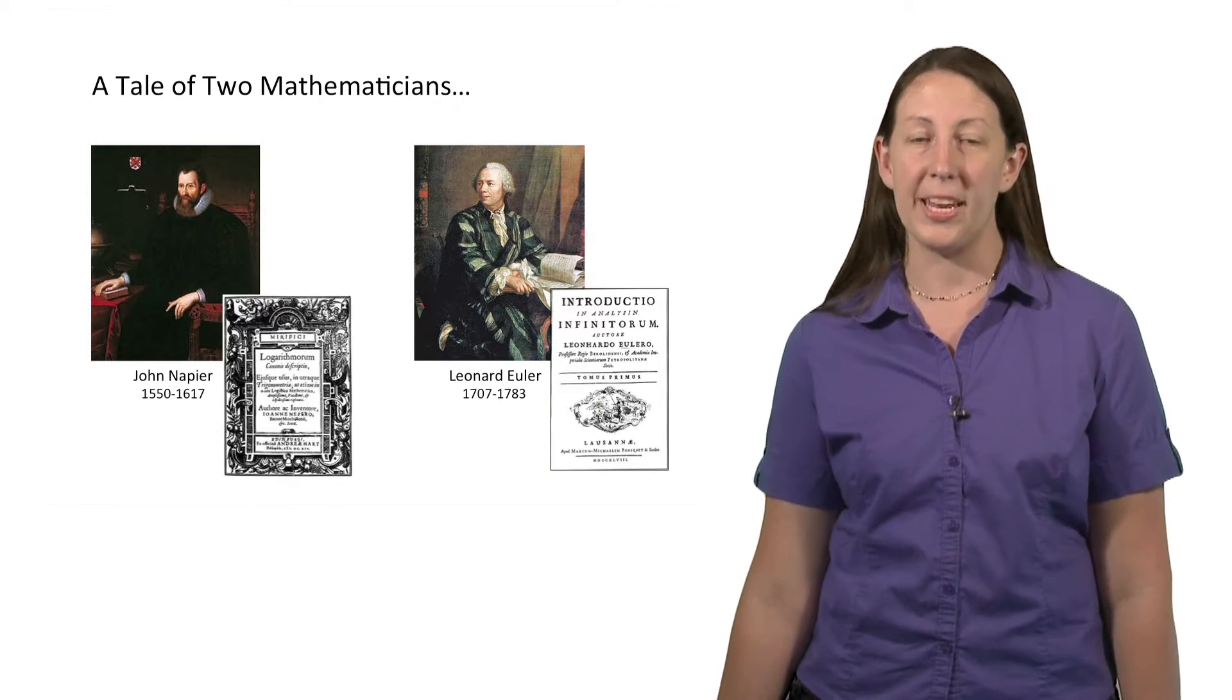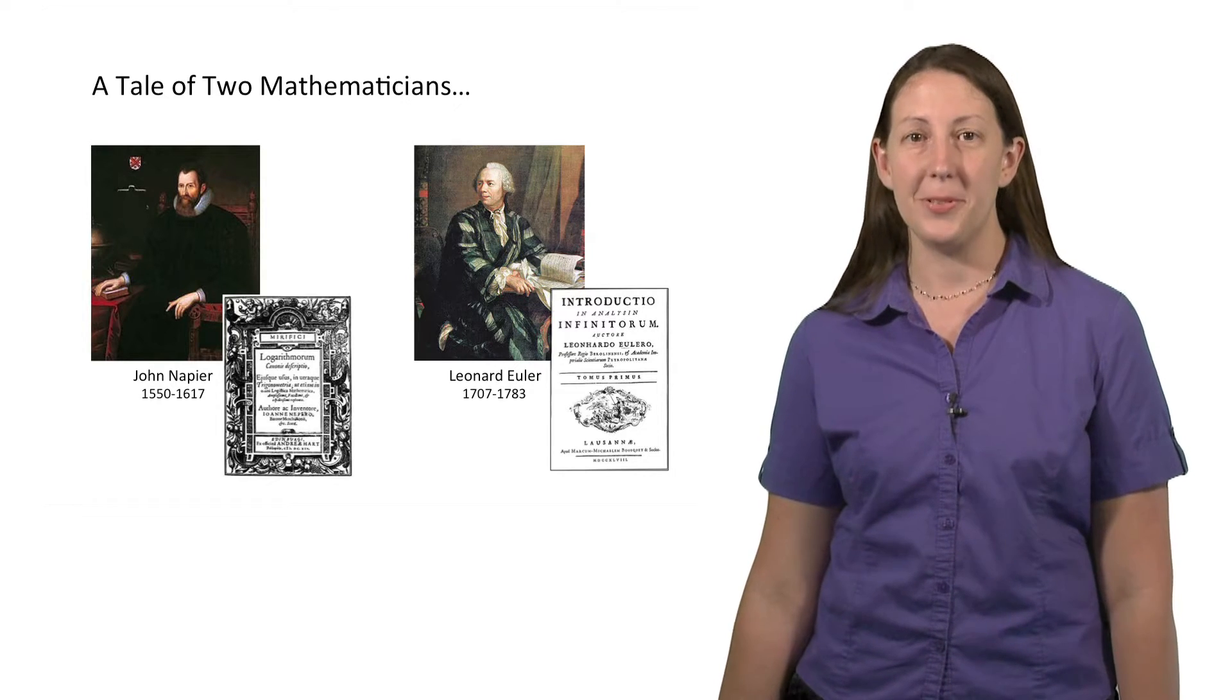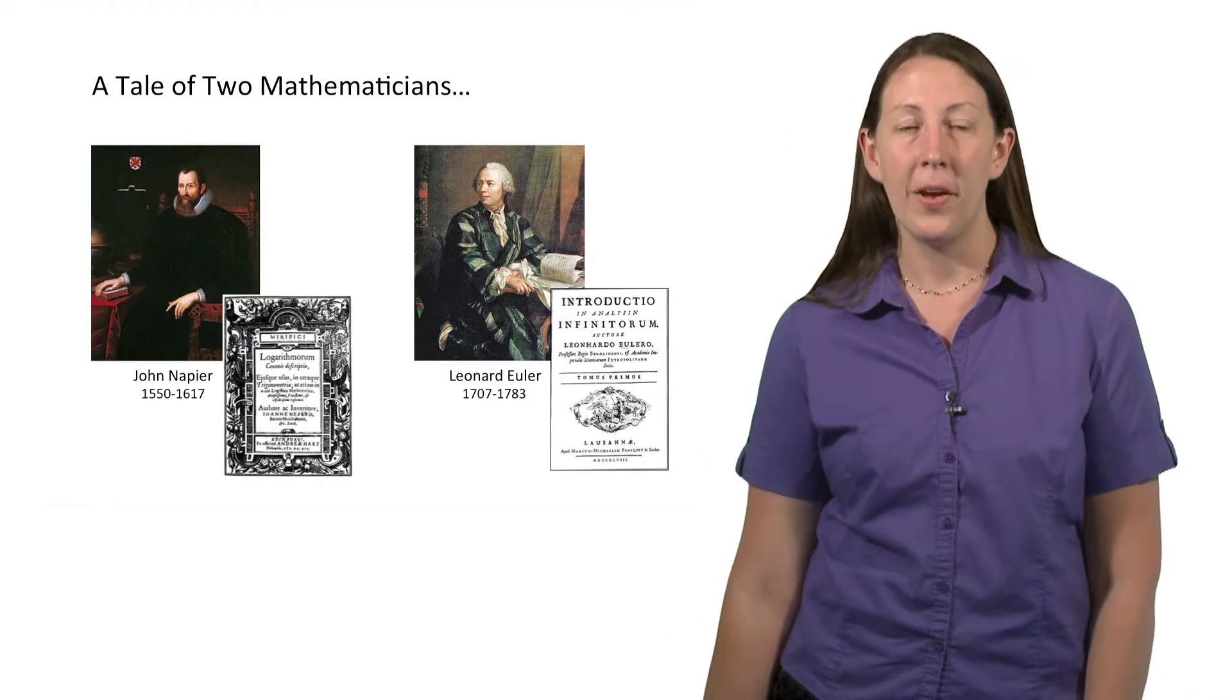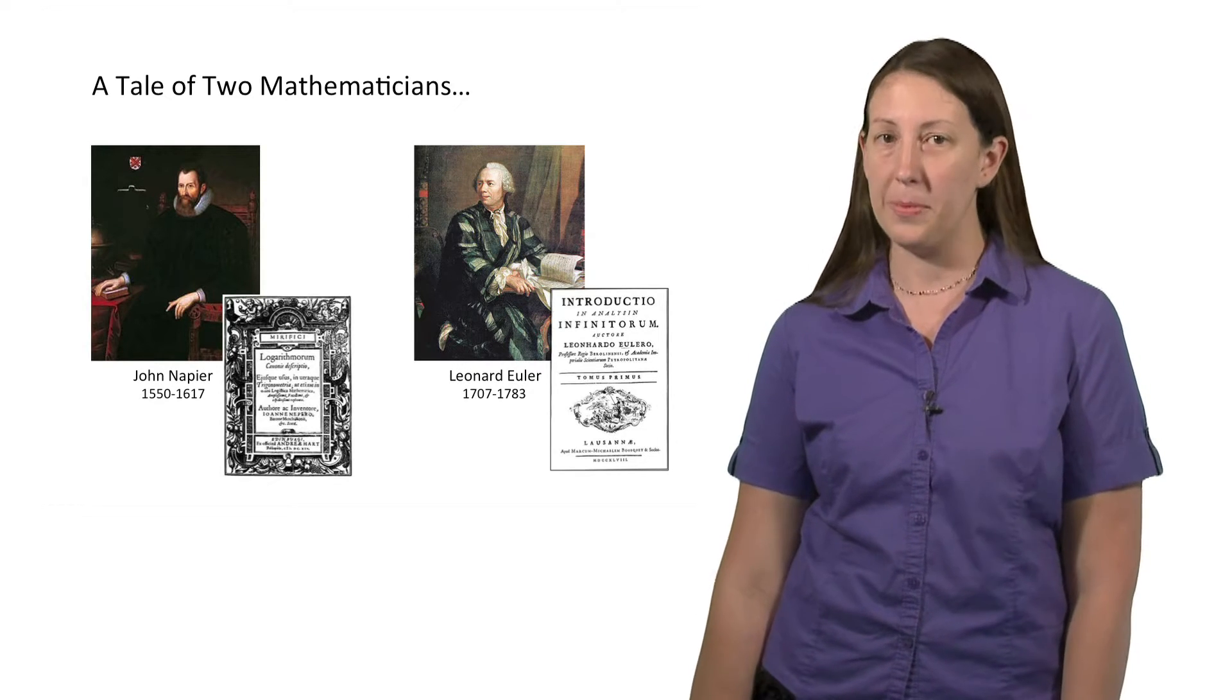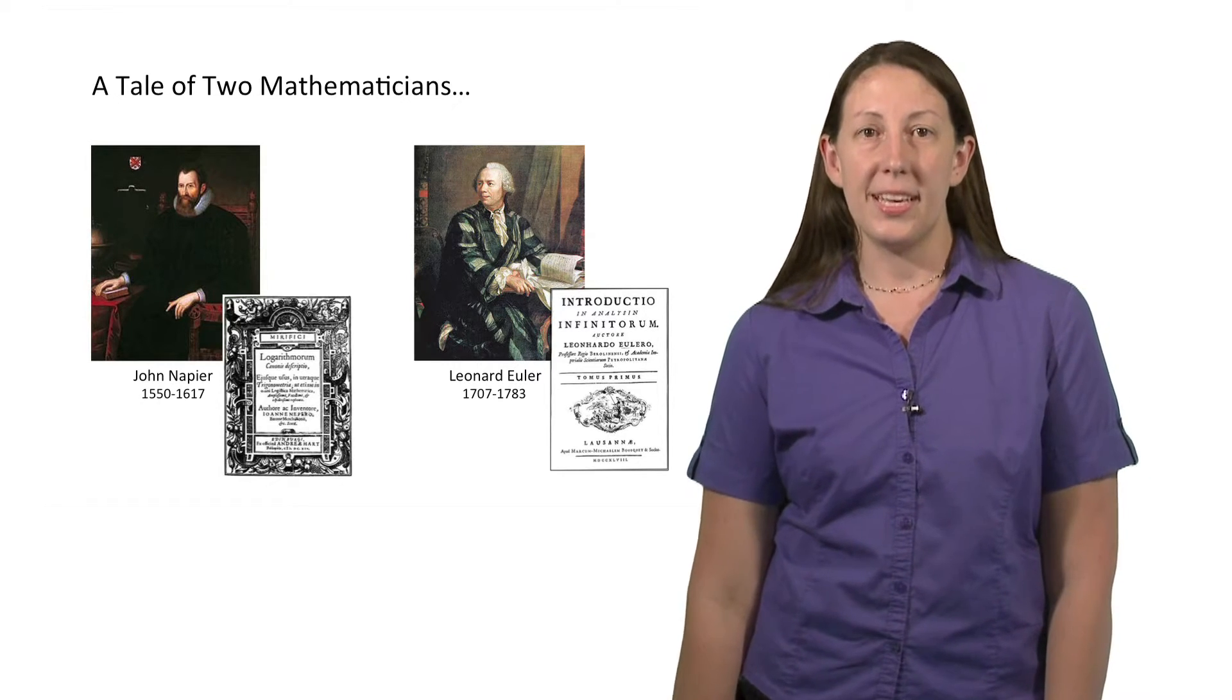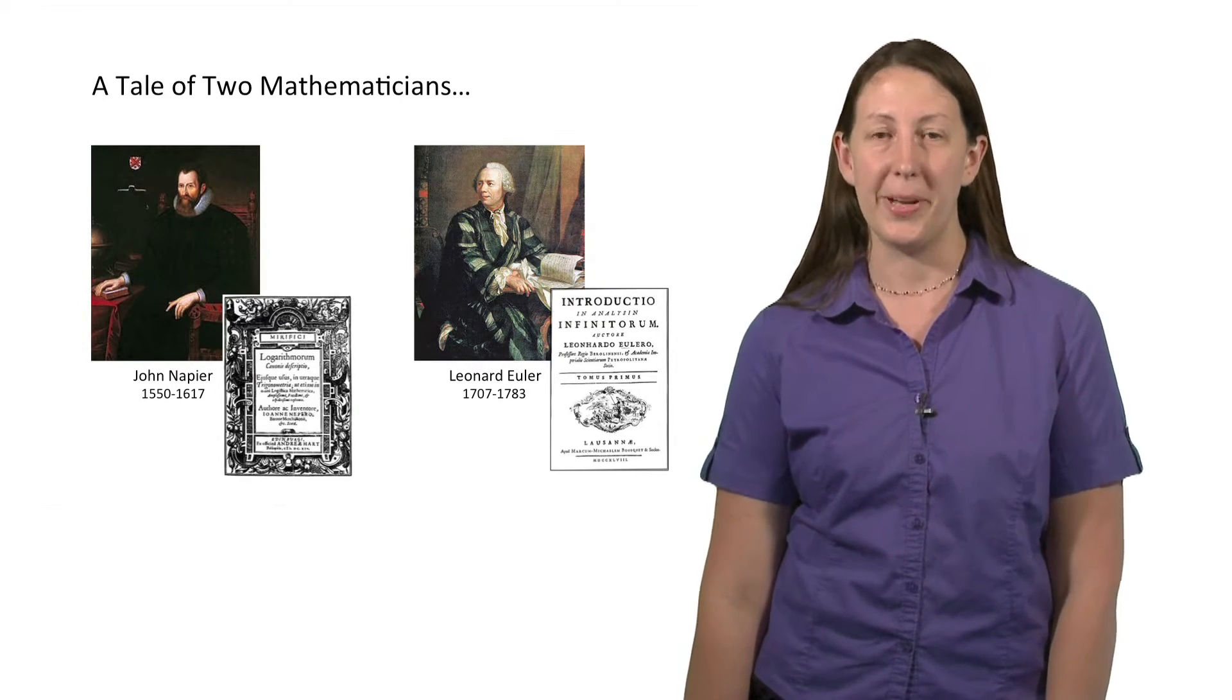Another mathematician, Leonard Euler, played a large role in the development of the exponential and logarithm functions. Leonard Euler was actually the first to use the notation for a function f(x). So whenever you see that f(x), that was due to Euler. Euler was a very prolific mathematician. He wrote over 800 published papers in his lifetime, and his works would complete 90 volumes.